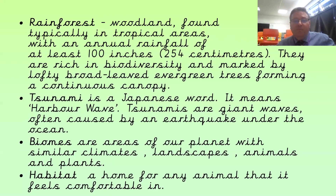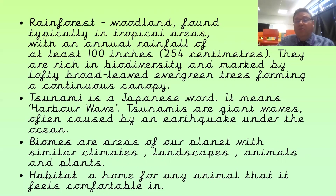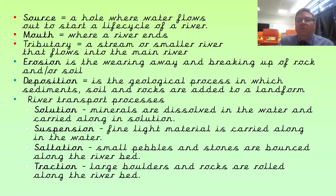Biomes — we've covered these in quite a lot of depth. These are areas of our planet marked by a similar climate, landscape, animals, and plants. We talk about the tropical rainforest biome because across the different rainforests they have very similar climates, landscapes, animals, and plants. The habitat is the home of any animal that feels comfortable in it — so the habitat of the Sumatran tiger, for example, is the Sumatran rainforest. That's where it lives and thrives.